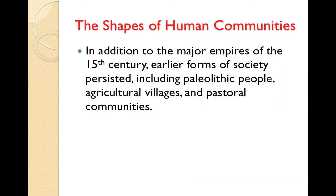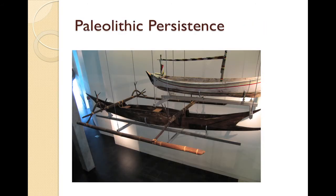The shapes of human communities: In addition to the major empires of the 15th century, earlier forms of society persisted, including Paleolithic people, agricultural villages, and pastoral communities. Paleolithic peoples lived in parts of Australia, the Americas, and Africa. This outrigger canoe from Australia is typical of the technology of these groups, who maintained a functioning society without agriculture, generally due to high food availability. On the northwest coast of North America, hunter-gatherers enjoyed over 300 edible animal species. As major empires expanded, Paleolithic people would be largely absorbed into modern societies by the beginning of the 20th century.